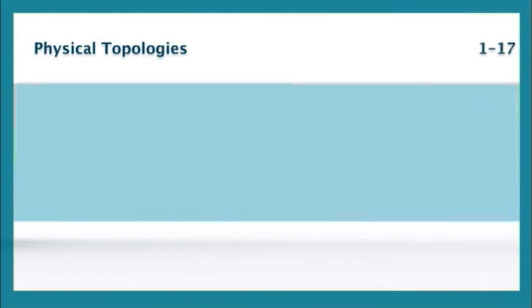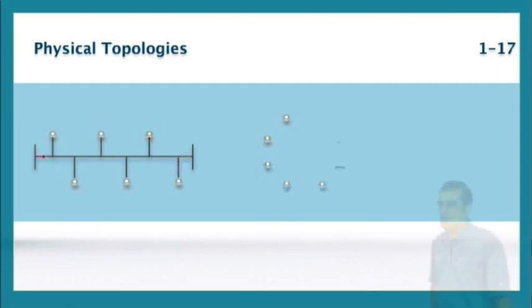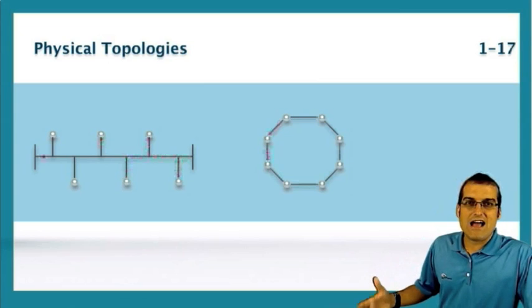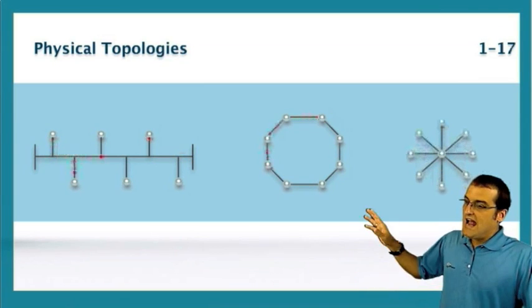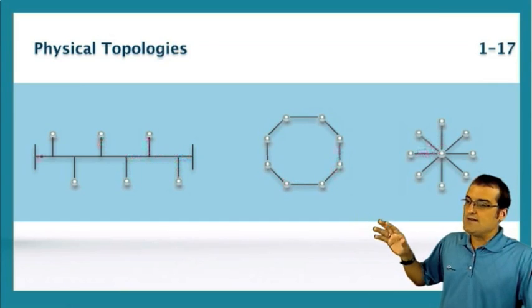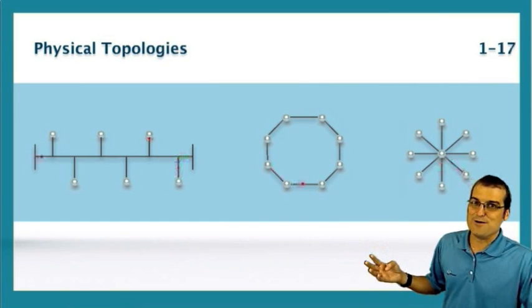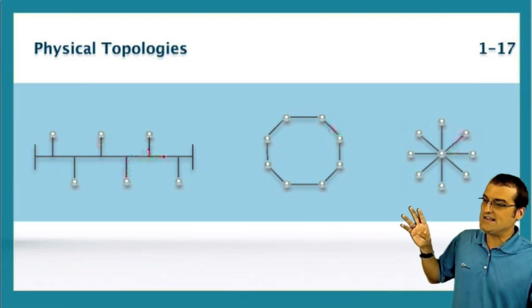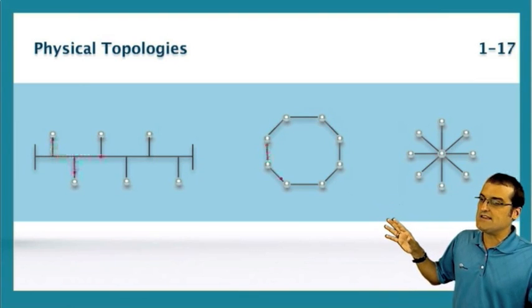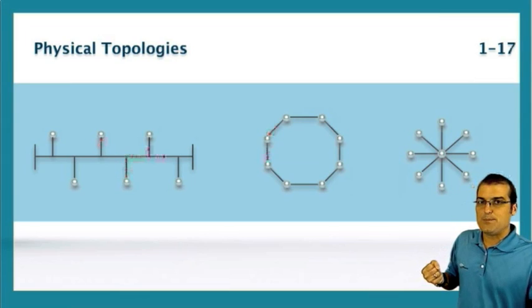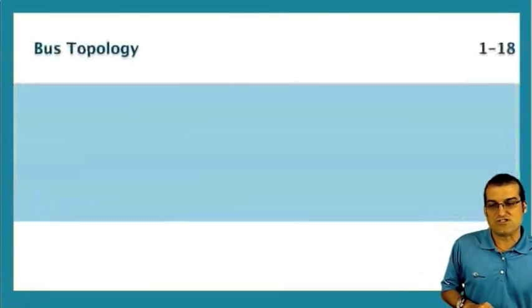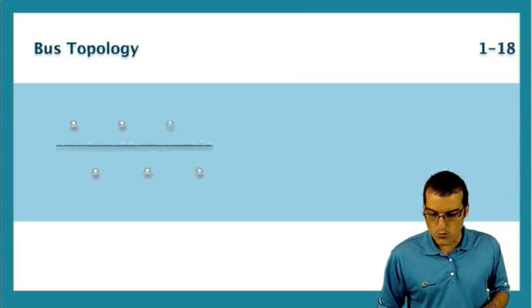Now, we need to distinguish this from physical topologies. There are standardized physical topologies that we can follow. They're typically represented in objects that look like this. Each of these physical topologies has particular strengths and weaknesses.